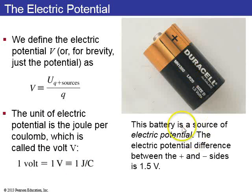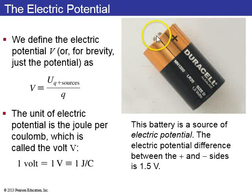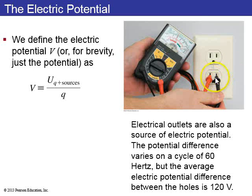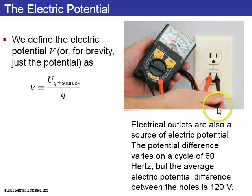Here is a battery. This DC battery is a source of electric potential. It's designed to have an electric potential difference between the plus and the minus side of 1.5 volts. The electrical outlets in your house are also sources of electric potential. In this case it's AC, so the potential difference between these two holes actually varies on a cycle of 60 times per second — 60 hertz. But on average, the electric potential difference between these two holes is 120 volts.